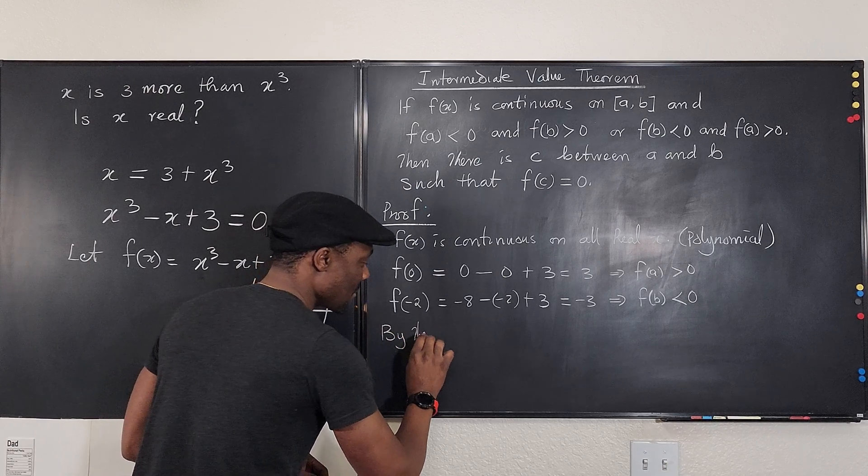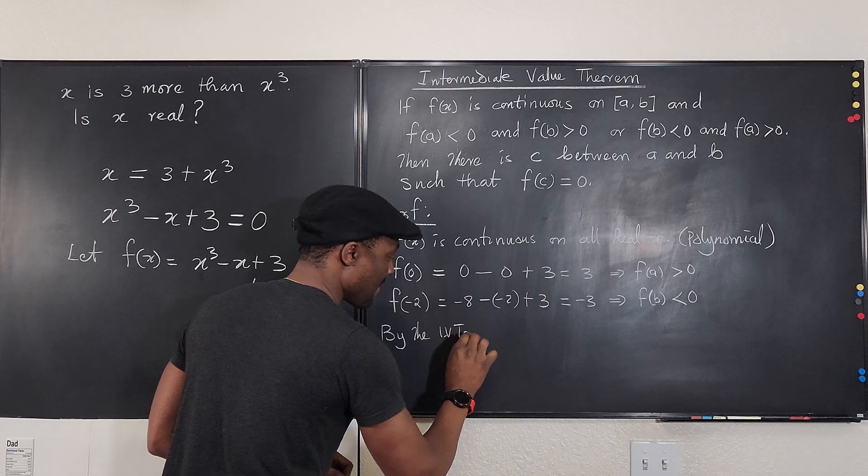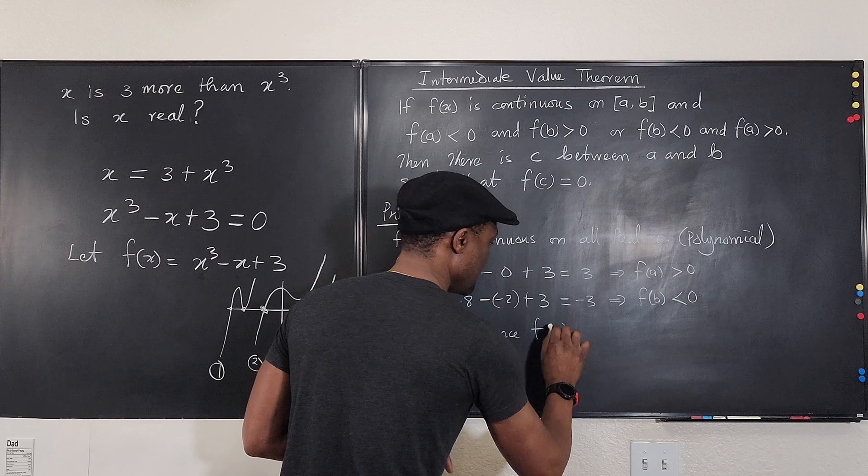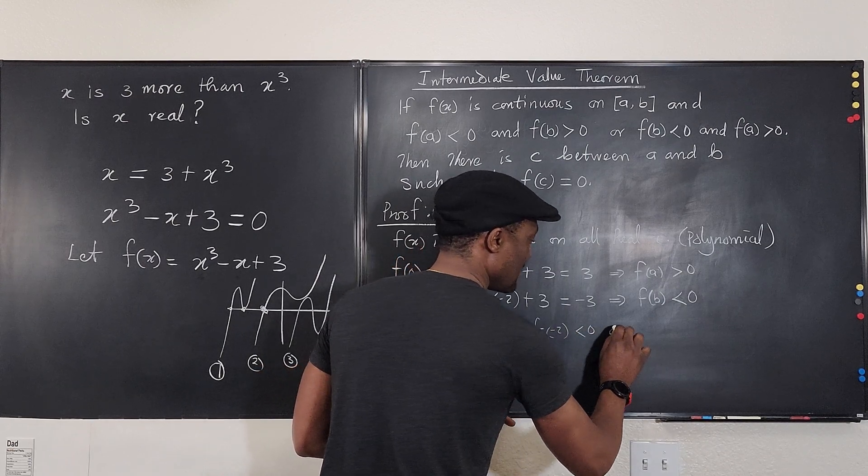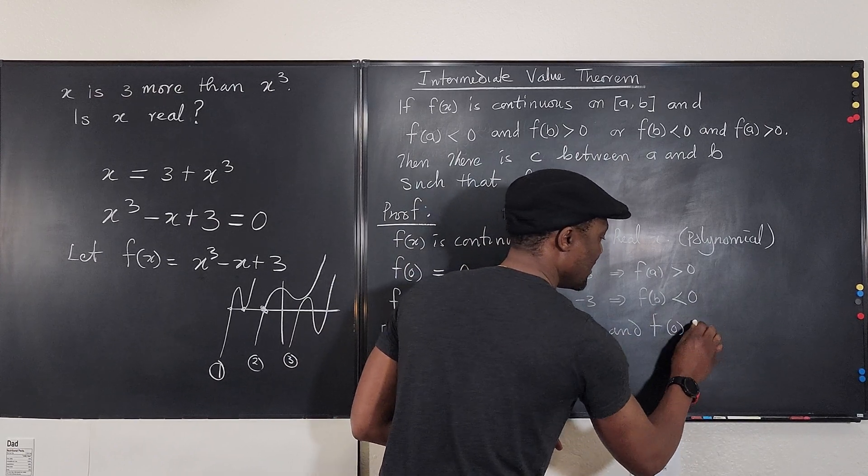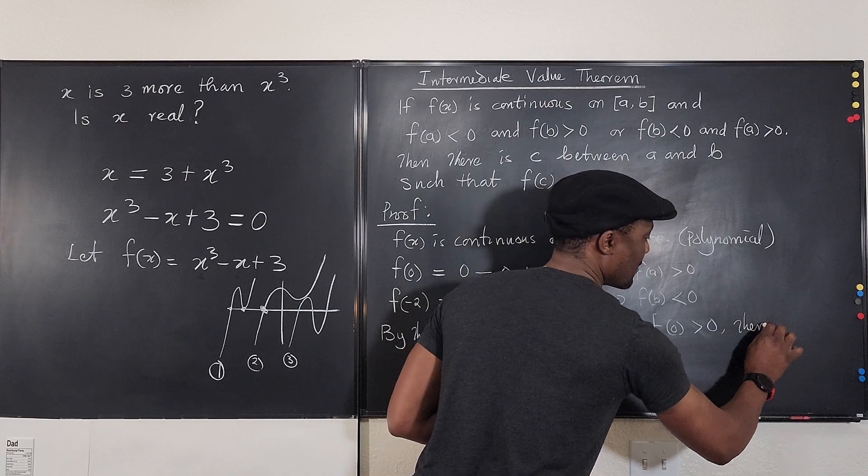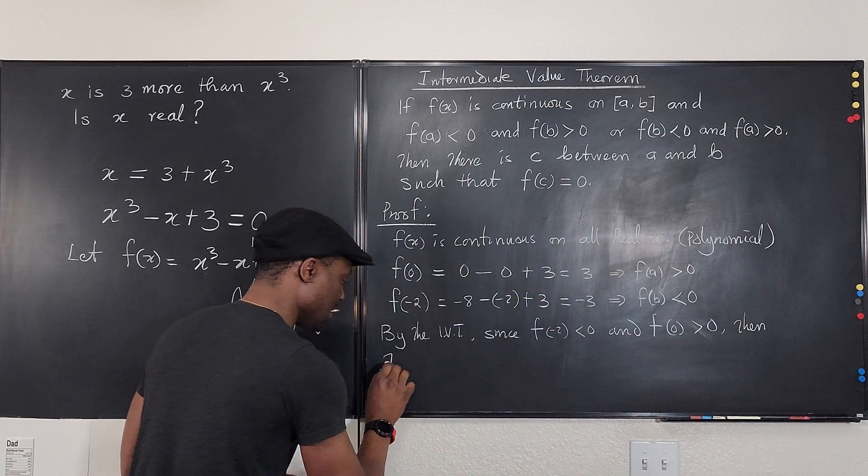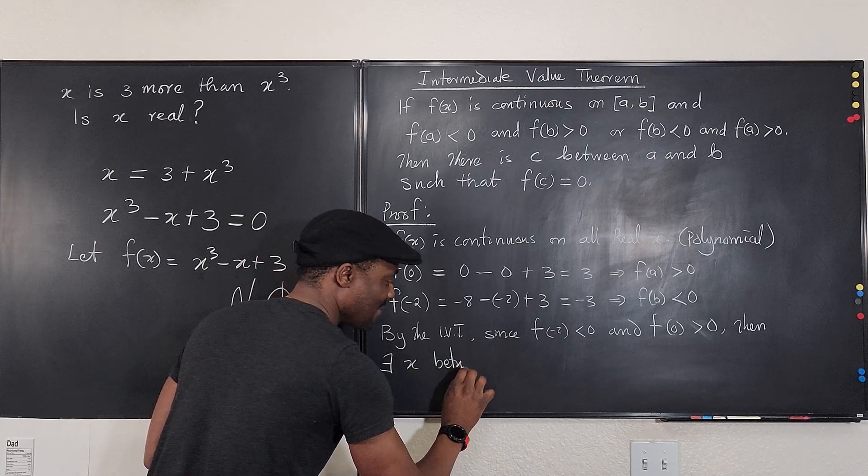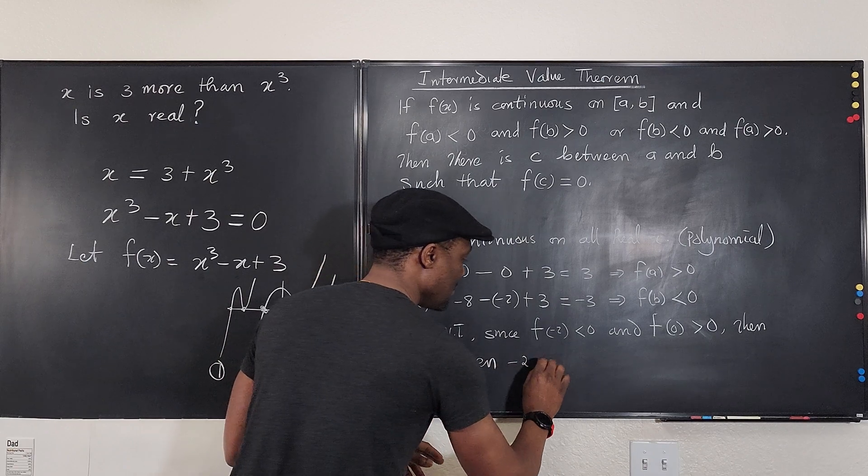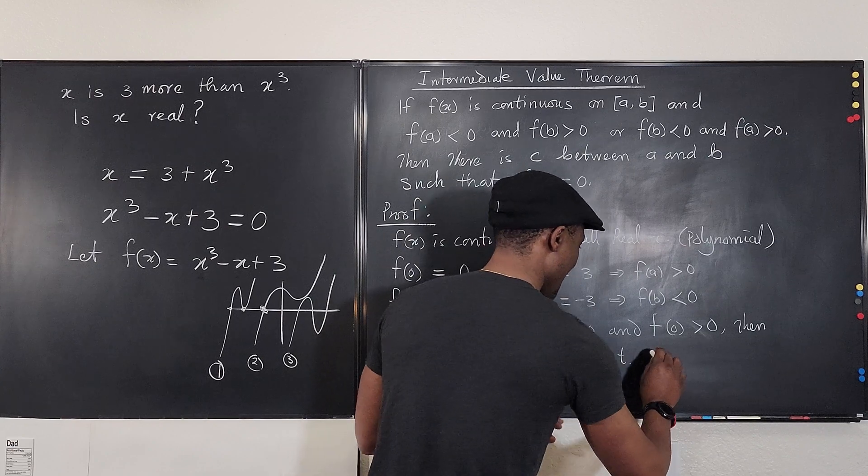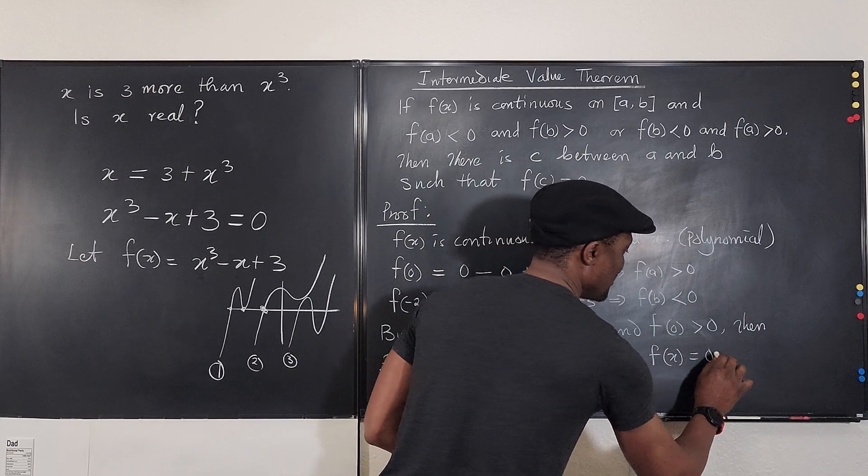So by the IVT, since f(-2) is less than zero and f(0) is greater than zero, then there exists some value of x between negative two and zero such that f(x) is equal to zero.